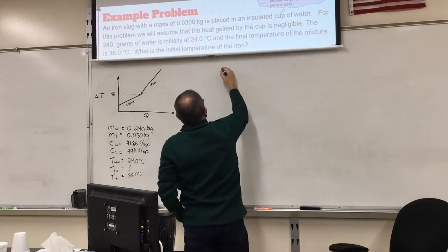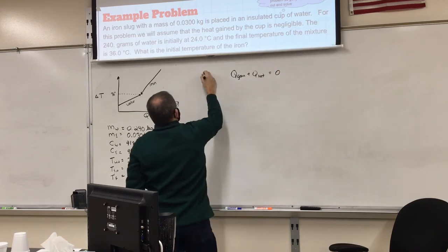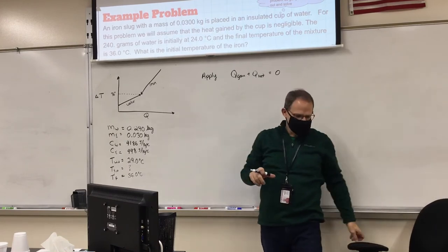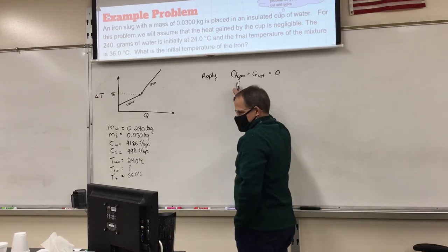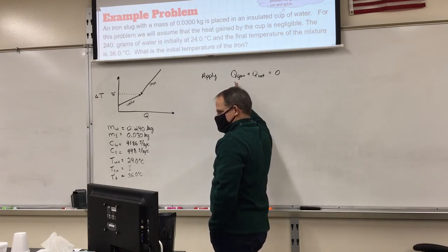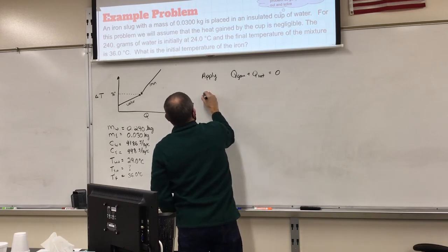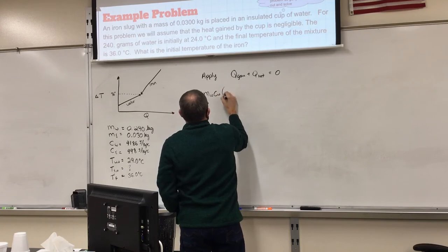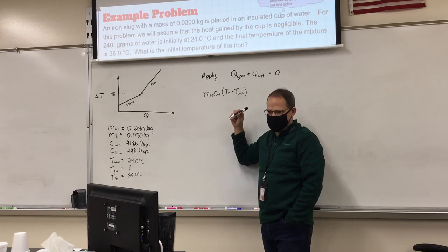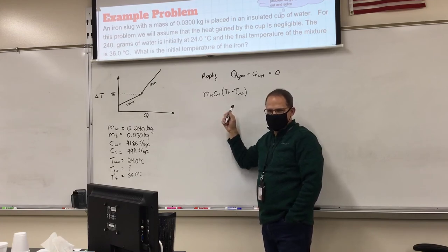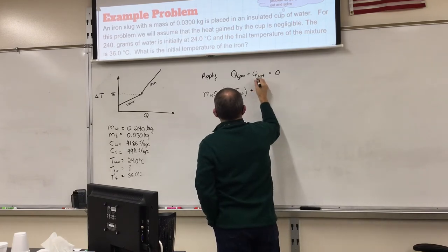The big idea: Q gained plus Q lost must add up to zero — that's the energy conservation principle. Applying that, what gains energy? The water. So the energy gained is the mass of the water times the heat capacity of water times T final minus T water initial — that's mc delta T for the water. Is it positive or negative? Since T final is bigger than T initial for the water, it's positive.